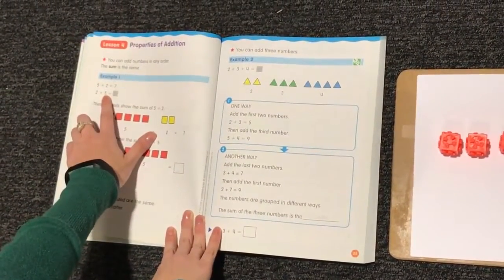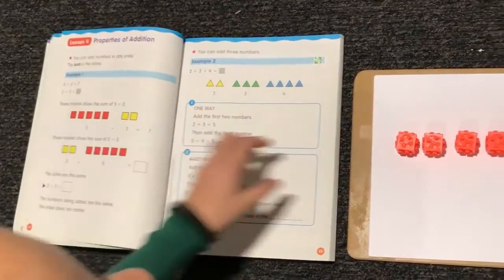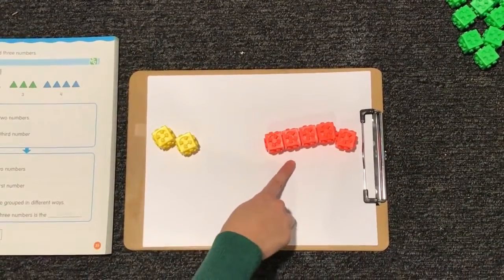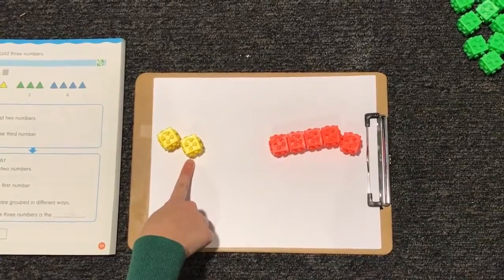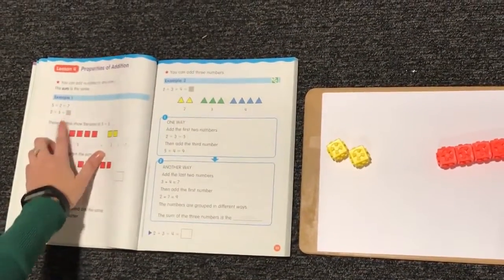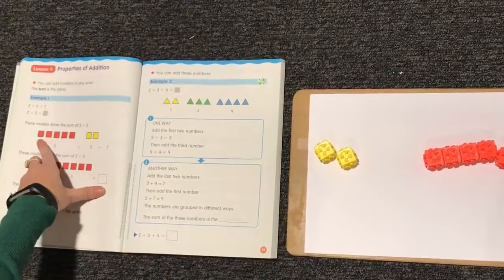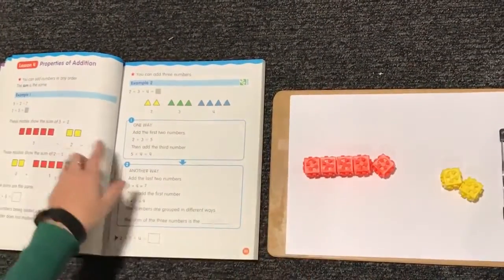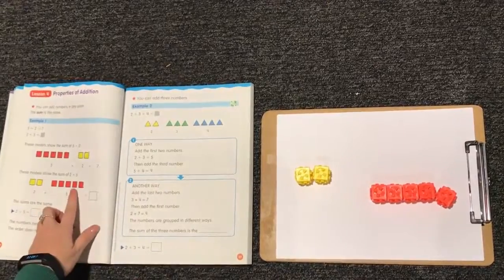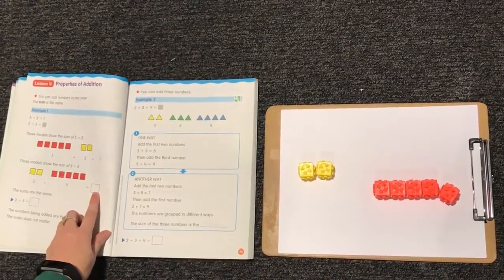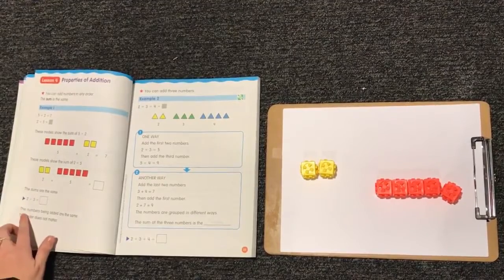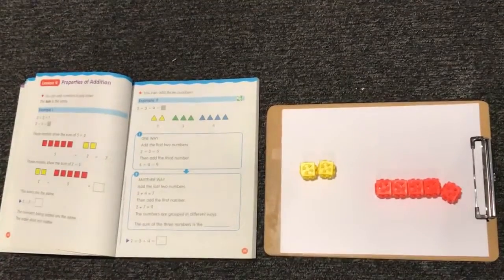Next, it says 2 plus 5 equals what? So I'm going to take these numbers and switch them. Now I have 2 plus 5. 1, 2, plus 5 more. 3, 4, 5, 6, 7 equals 7. So here we have 5 plus 2 equals 7. Then we just switch it and have 2 plus 5, and it still equals the same 7. The numbers being added are the same. The order does not matter.